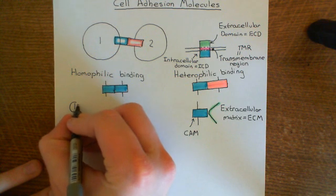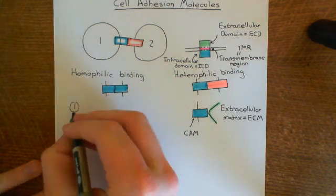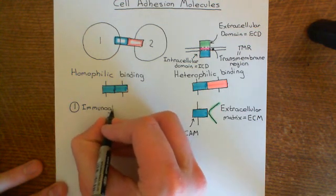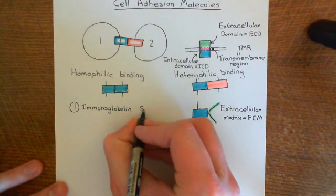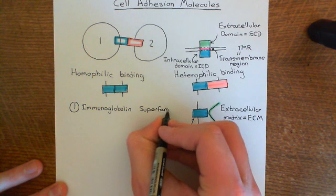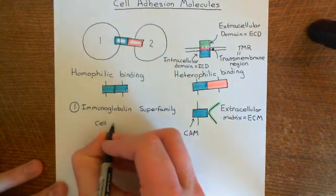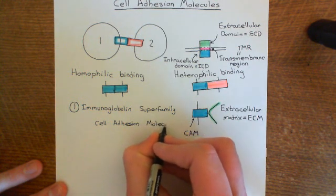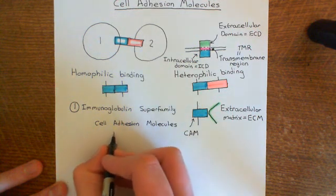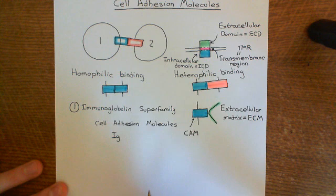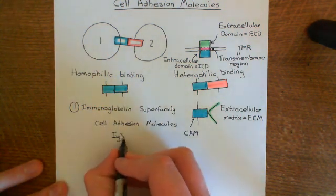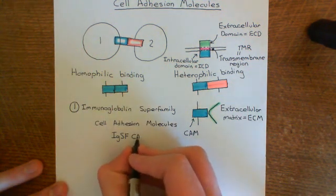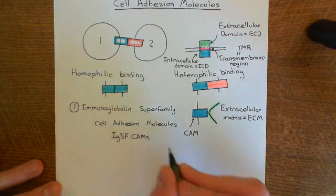Family one is the one we're going to discuss for the rest of this video. It's what's known as the immunoglobulin superfamily cell adhesion molecules. The abbreviation for immunoglobulin is Ig, superfamily is abbreviated to SF — so IgSF means immunoglobulin superfamily — and then you add CAMs as a separate word. So this is the immunoglobulin superfamily cell adhesion molecules, or IgSF CAMs.